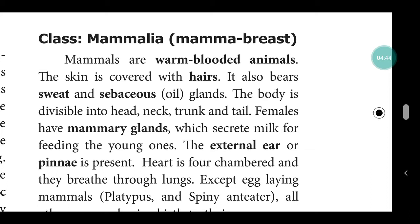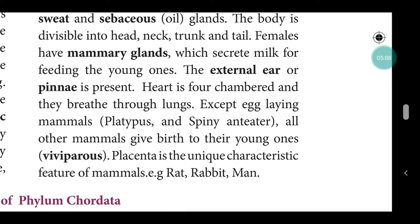The body is divisible into head, neck, trunk, and tail. Females have mammary glands which secrete milk for feeding the young ones. The external ear or pinnae is present. The heart is four-chambered and they breathe through lungs. Except for egg-laying mammals — such as platypus and spiny anteater — mammals give birth to young ones.